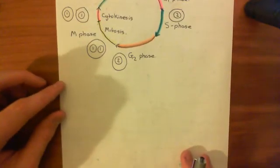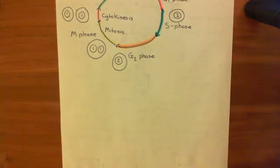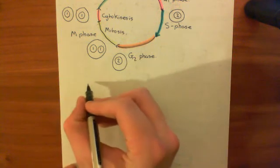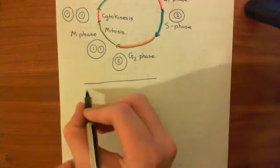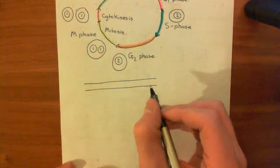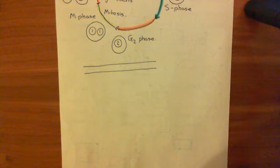When the PI3 kinase binds to these phosphorylated tyrosine residues on the intracellular aspect of the HER2 receptor, what it can now start doing is phosphorylating a normal component of the phospholipid bilayer and converting it into another phospholipid product.